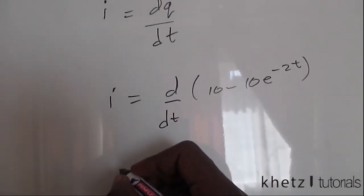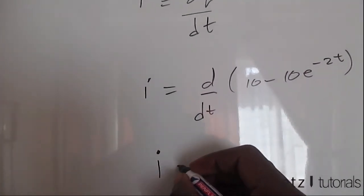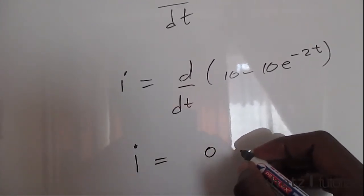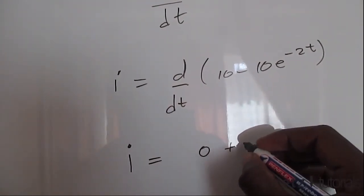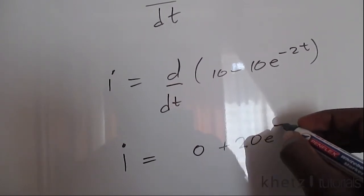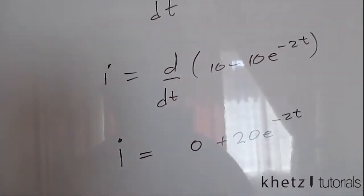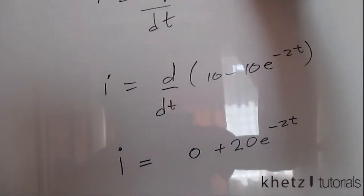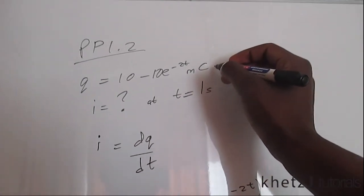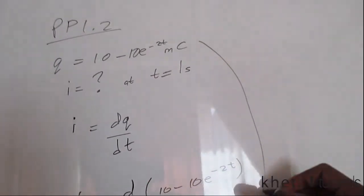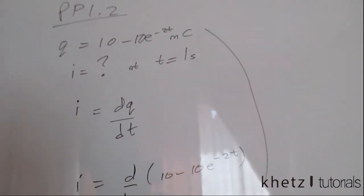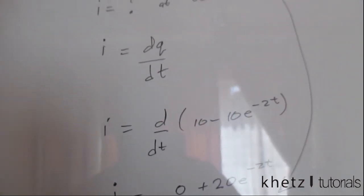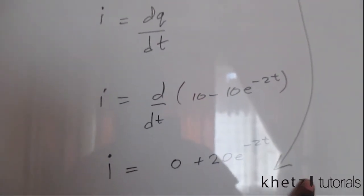Going on to derive this, i equals zero plus 20e to the minus 2t. Not forgetting the units, we take these units, microcoulombs, and bring them down here. But after deriving, since you're finding the current, this is going to be microamps or microamperes.